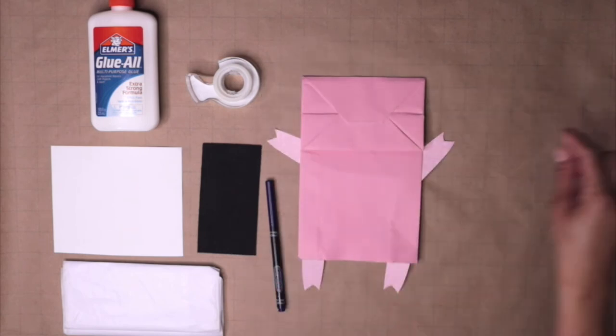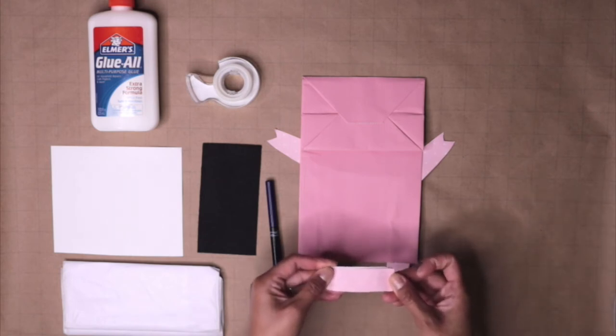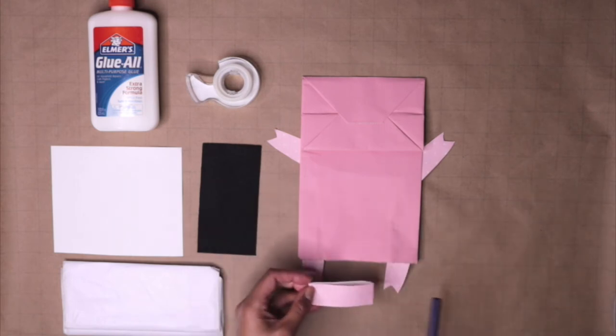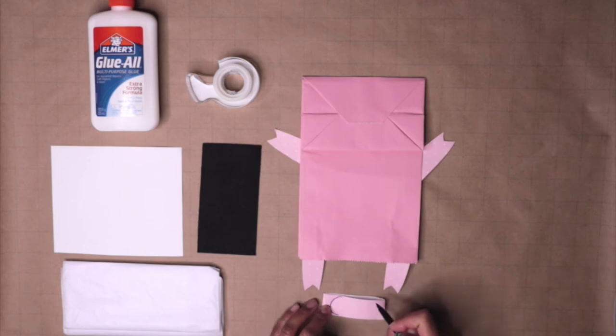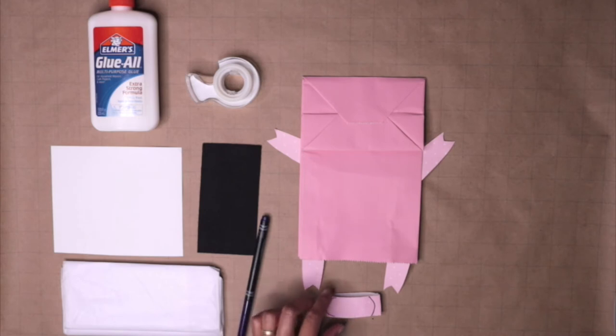To make the pig's snout, use another piece of paper in the shape of a rectangle. Use your marker and draw curves on each side of the paper. Do ask a grown up to help cut out the paper.